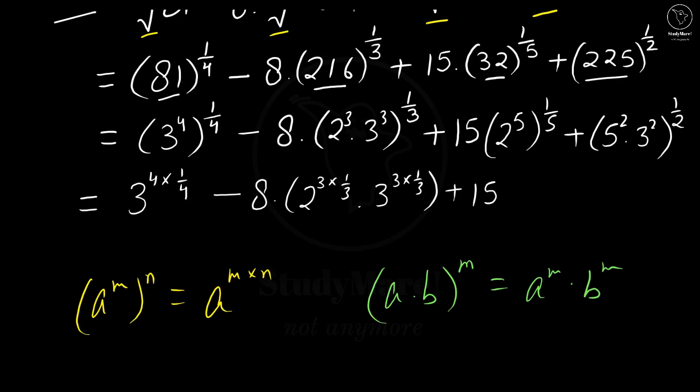Here we can use the identity in yellow. So we get 2 to the power 5 into 1 by 5 plus. Now, here we need to use the identity in green. That is a into b whole to the power m is equal to a to the power m into b to the power m. So we get 5 to the power 2 into 1 by 2 into 3 to the power 2 into 1 by 2.